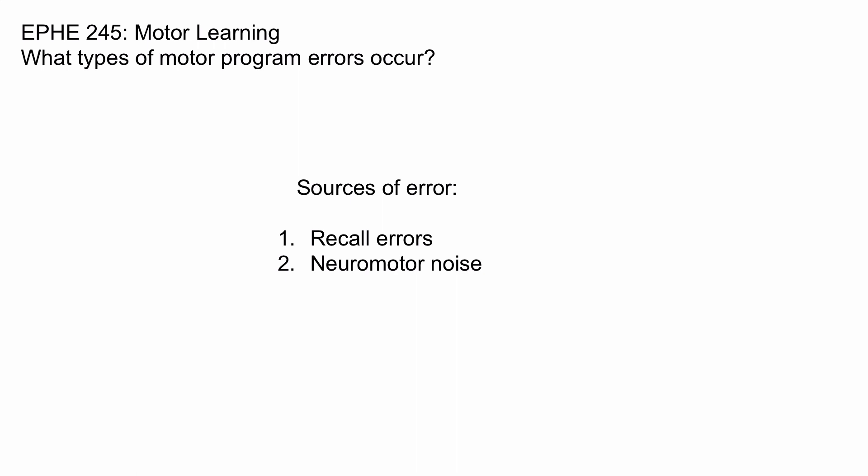It's important to note that both of these sources are internal — these are factors within the body that cause error. Last but not least, there are changes in the movement environment. These are changes beyond your control. Imagine passing the ball in soccer: the person you're passing to is moving and they abruptly change direction. That is something beyond your control, so this is an external source of error.